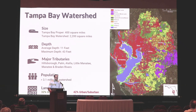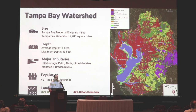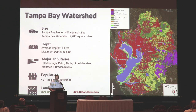Our focus area is the Tampa Bay Estuary and its surrounding watershed — that's basically the colored areas on the map. They're color-coded according to land uses observed within the watershed. The yellow areas are agriculture, the red areas are urban-suburban development, some of the purple areas are mining in the eastern part of the watershed, and the green areas are the remaining natural lands. Anywhere within that colored map area, if a raindrop falls, it will make its way into the Tampa Bay Estuary.